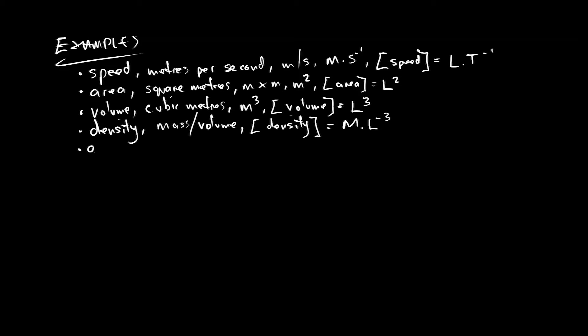Acceleration. Acceleration is another one to look at. Well, that is of course speed over time. Well, we knew what speed was up here. There it is. It's LT to the minus one. Well, you're going to then write LT to the minus one, which is speed, sitting over time. So therefore, you've got LT to the minus one. There's a one there. Take away the bottom power, and we end up with LT to the minus two. If you don't understand that, watch the indices video, as I said earlier.